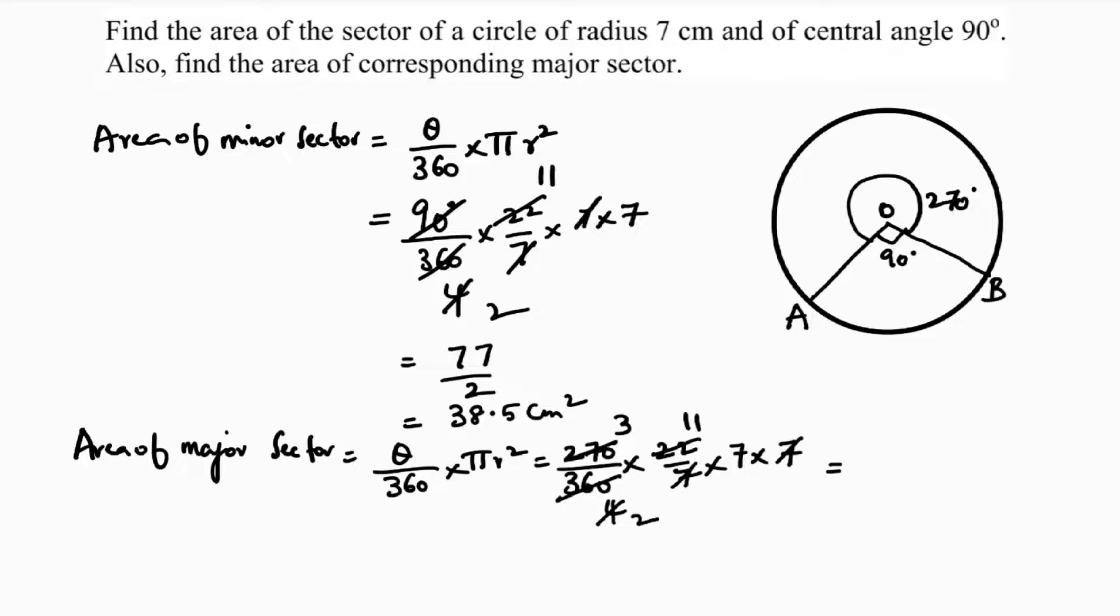231 divided by 2 which is 115.5 centimeter squared. Otherwise see, 270 is 3 parts, 90 is 1 part, so you can just tell 38.5 into 3. If you do, you will get directly the same answer, 38.5 into 3 equals 115.5.